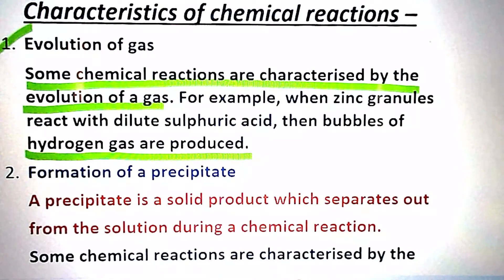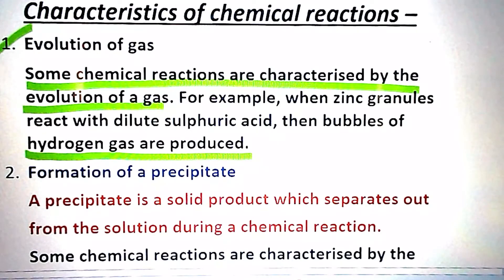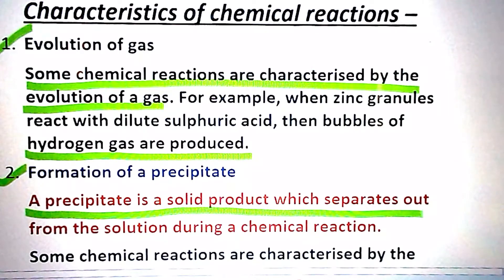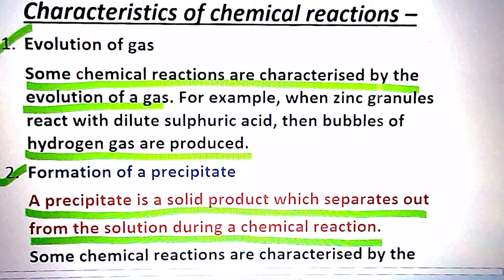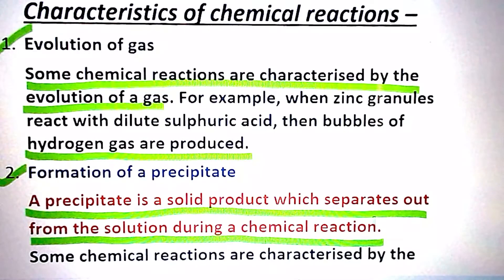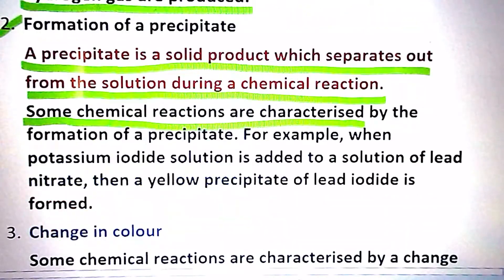The second characteristic is formation of precipitate. A precipitate is a solid product which separates out from the solution during a chemical reaction. In other words, precipitates are in the insoluble form — they are not soluble. Some chemical reactions are also characterized by the formation of a precipitate.